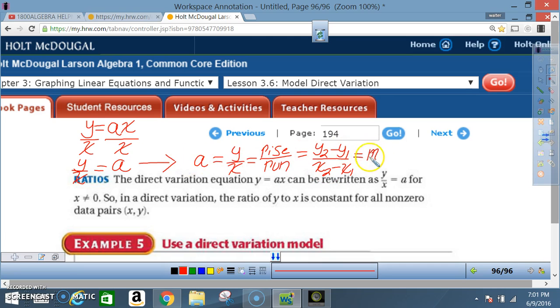So, going the other way, slope equals Y sub 2 minus Y sub 1 over X sub 2 minus X sub 1. That's a fancy way of saying rise or run. That's another way of saying Y over X. And that's another way of saying your constant of variation. So, constant of variation is the same as slope.